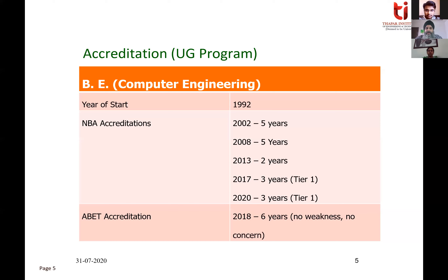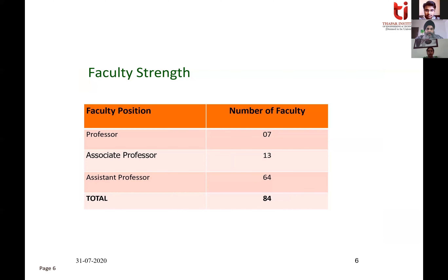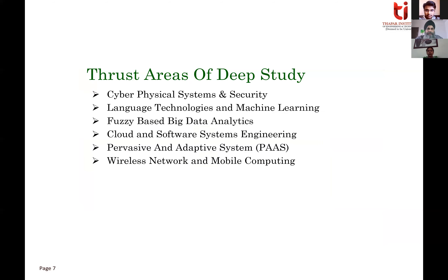The Computer Engineering program is NBA accredited — the National Board of Accreditation — which is the local accreditation body in India. We also received ABET accreditation from the American Board for Engineering Council in 2018, with six years of accreditation with no weaknesses or concerns raised. As for faculty, we have 7 professors, 13 associate professors, 64 assistant professors, and 84 total faculty members.